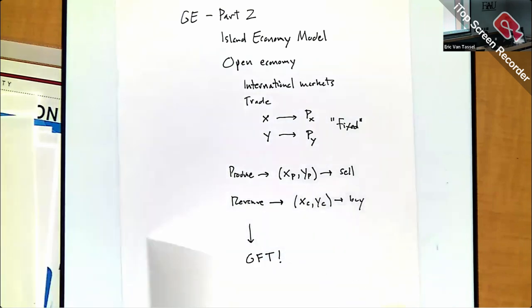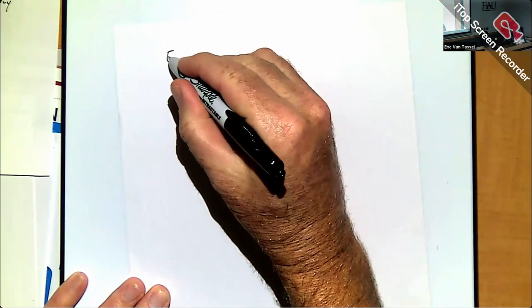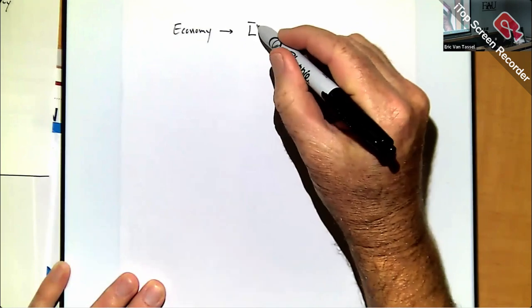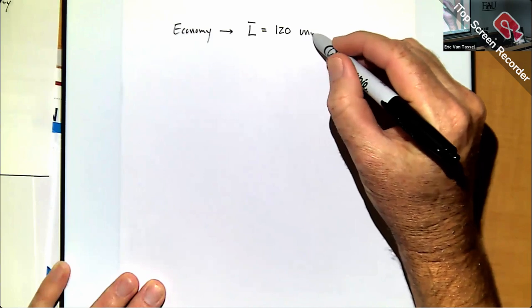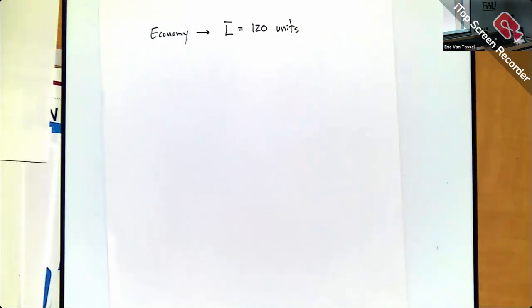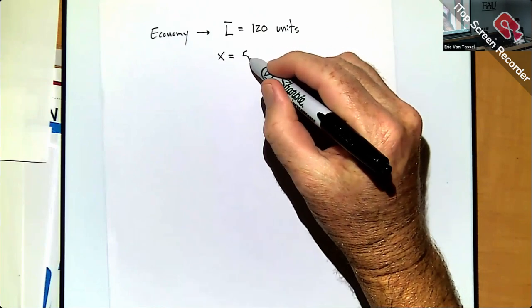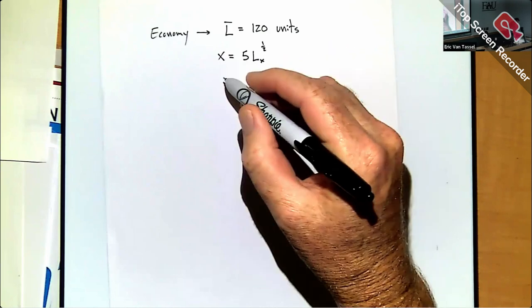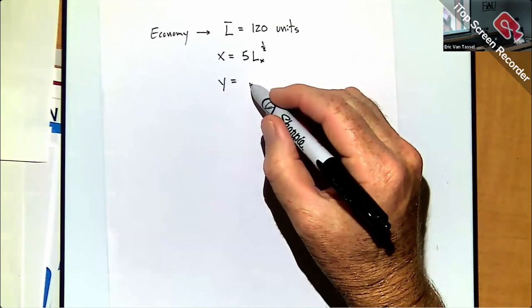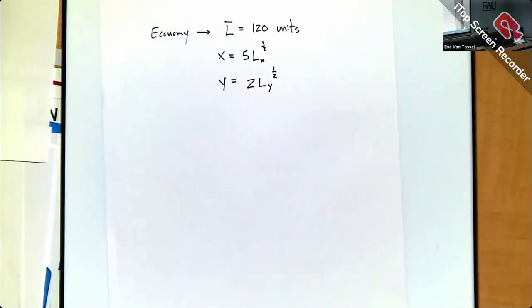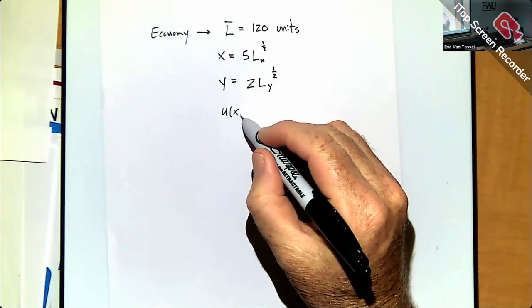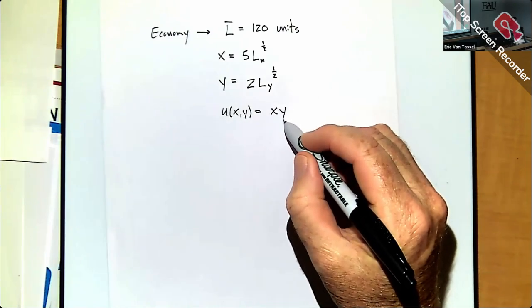Let's set up a model similar to what we did on Wednesday. The economy has two types of goods, a labor endowment of 120 units, and production functions: X = 5LX^(1/2) and Y = 2LY^(1/2). For preferences over consumption baskets, we use a simple Cobb-Douglas utility function: U = X times Y.